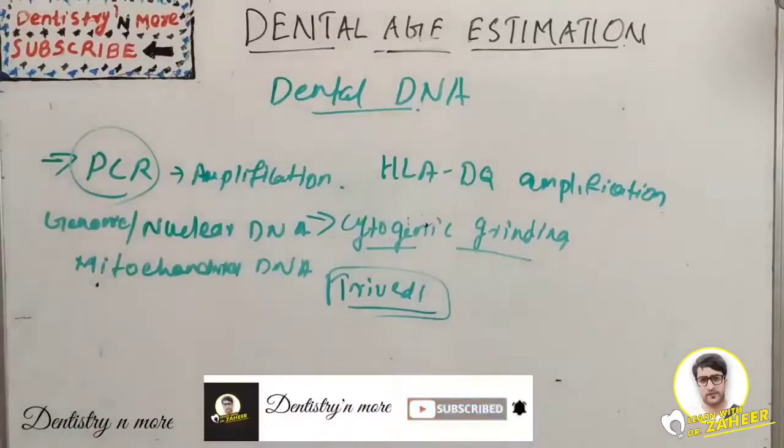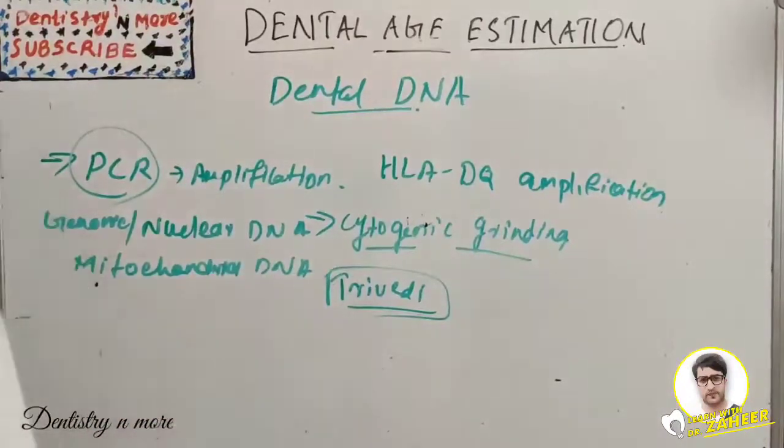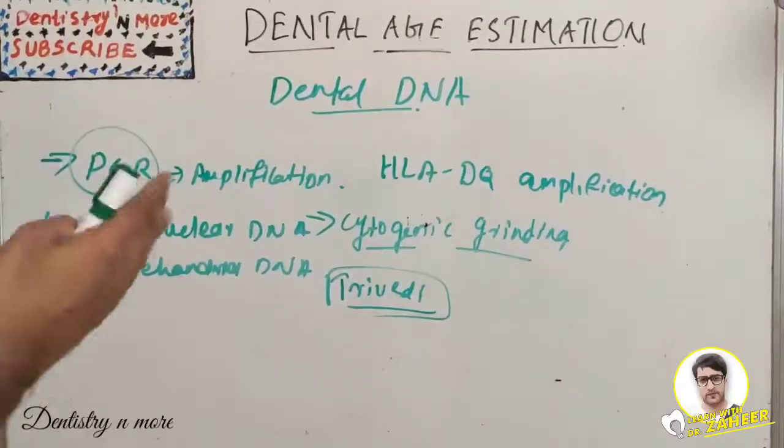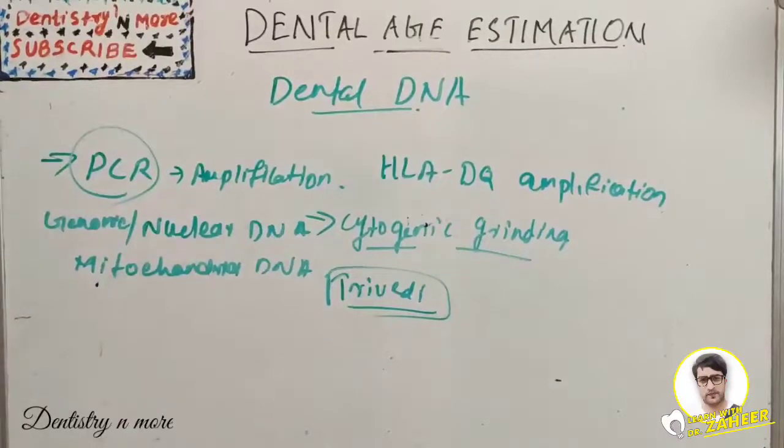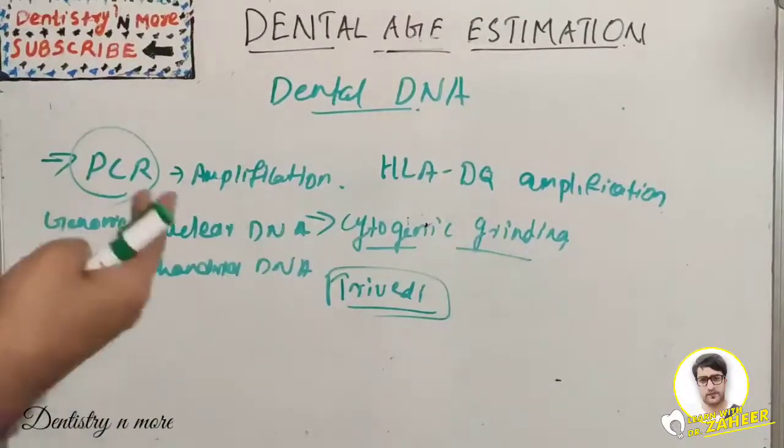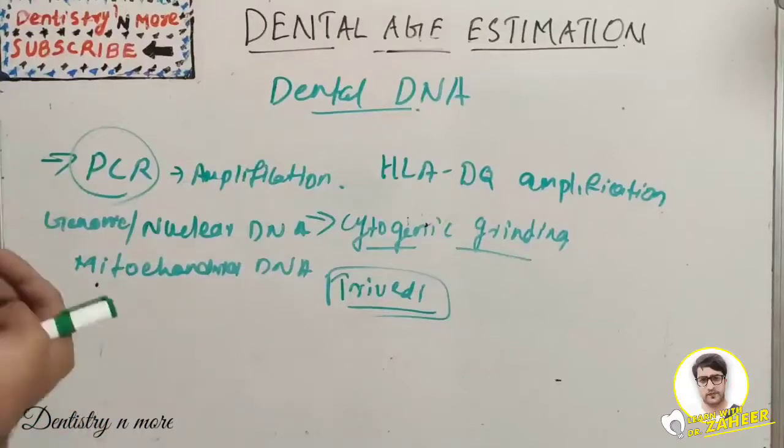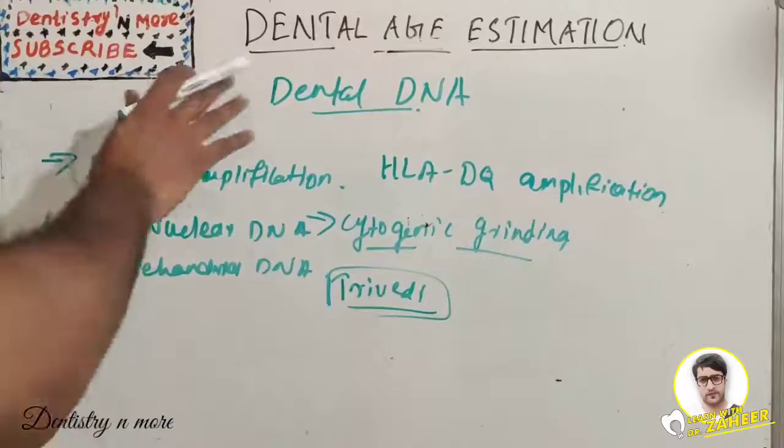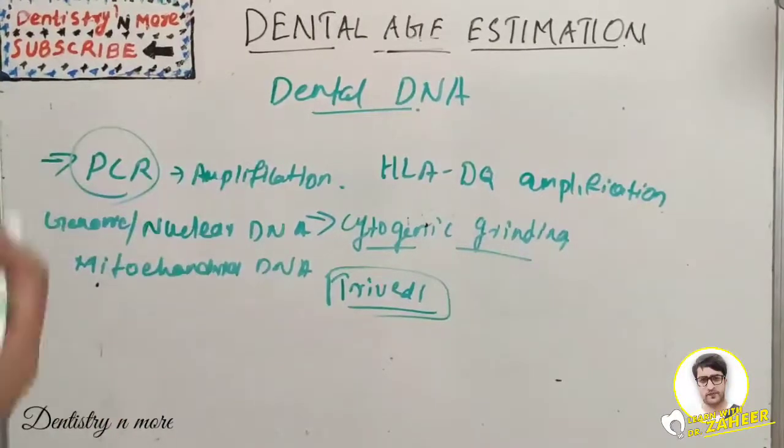We can get the DNA and use it for person's identification, comparing it with the person's parents, siblings, or person's antemortem DNA. The DNA can be extracted from a toothbrush specimen, from hair, or from a comb the person used before. We can estimate the age or person's identification using dental DNA.